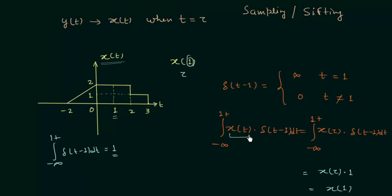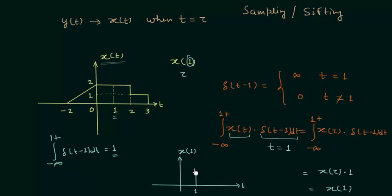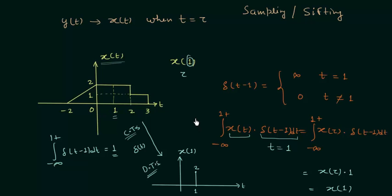For this, we multiplied xt with the unit impulse signal having the impulse at time t equal to 1. If we plot the waveform of the result, when time t is equal to 1, signal x(1) is equal to 2. We have simply obtained a discrete time signal from the continuous time signal using the unit impulse signal. So we can obtain the discrete time signal from the continuous time signal with the help of the unit impulse signal. I hope this lecture is clear, and you now understand the sampling property of the unit impulse signal.